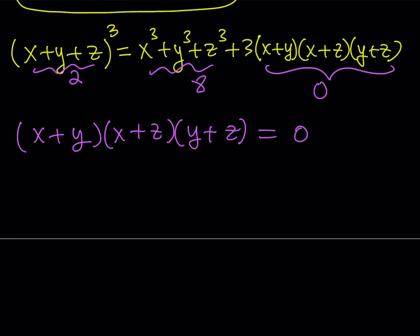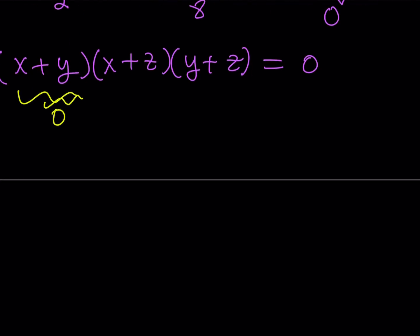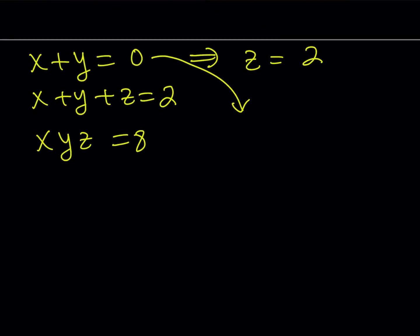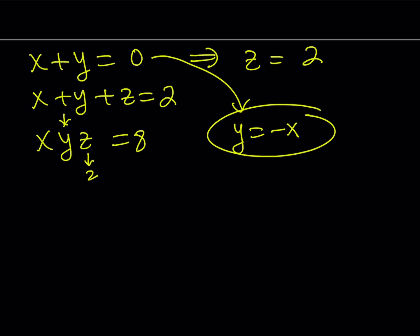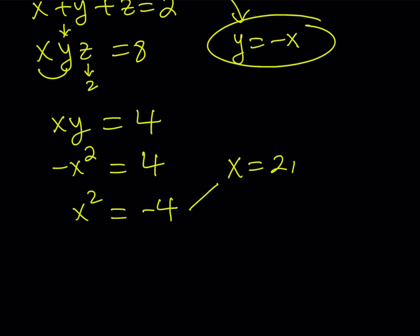It doesn't really matter which one because we have some type of symmetry here. I can safely say, let x plus y equal 0. If x plus y is equal to 0, we also know that x plus y plus z is equal to 2, so we immediately get that z is equal to 2. We also know that xyz is equal to 8. From x plus y equals 0, we can say y is equal to negative x. Substituting, and knowing z is equal to 2, this gives us xy equal to 4. With y as negative x, we get negative x squared is equal to 4, and x squared is equal to negative 4. Obviously, x is not a real number — we're getting results that deal with complex numbers. From here, x is either 2i or negative 2i.